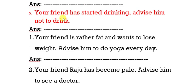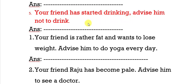The next example: your friend has started drinking — advise him not to drink. This is a negative one, so the right answer is: you should not drink, or you should stop drinking.